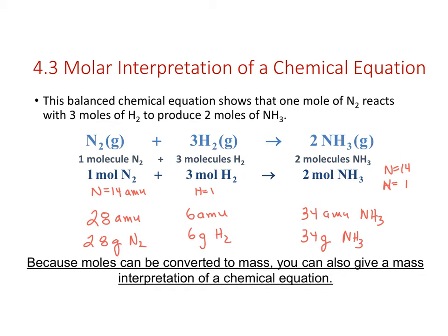We can take the molar mass—the mass in grams needed to have one mole of a compound—directly from the molecular weight. With one mole of nitrogen, three moles of hydrogen, and two moles of ammonia, we can check conservation of mass: 28 plus 6 is 34, so we expect 34 grams of ammonia.